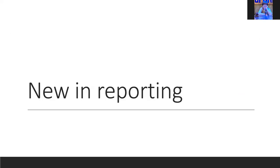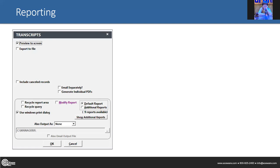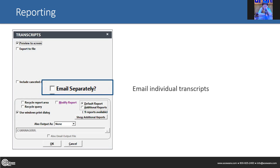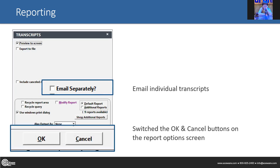Let's talk about reporting — what's new first. One important new feature: you can now email individual transcripts. We had the ability to do certificates or invoices, but now you can also send individual transcripts. Also keep an eye on this: the OK and Cancel buttons on your gray report options screen are switched. The rationale was that it's 'OK and Cancel' everywhere else. So if you've recently updated and you hit what you think is OK, you just get back to the home screen. OK is now on the left, Cancel is on the right.